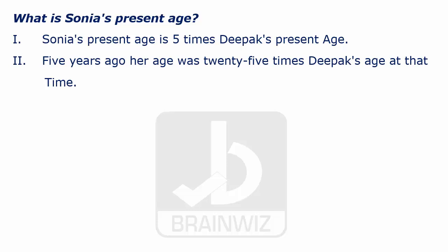Hello, welcome to BrainViz videos. Now we are going to see a question from data sufficiency. In this question it has been told that what is Sonia's present age, given two statements. The first statement is Sonia's present age is five times of Deepak's present age, and the other statement is five years ago Sonia's age was 25 times of Deepak's age.